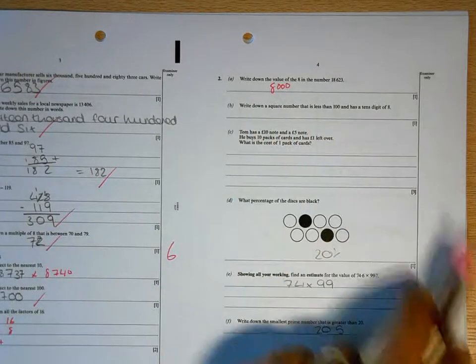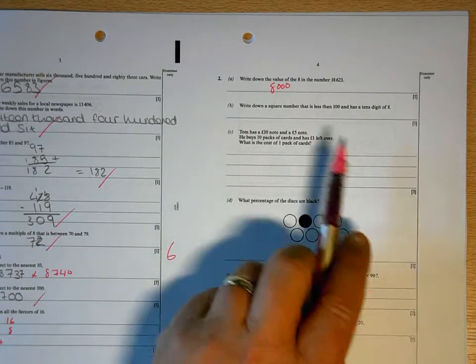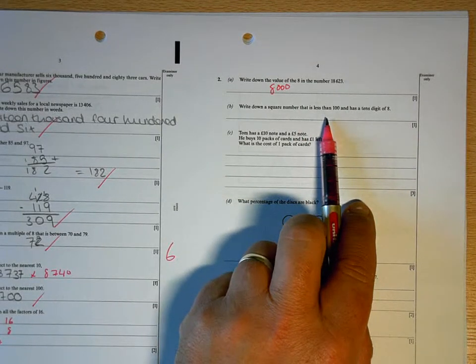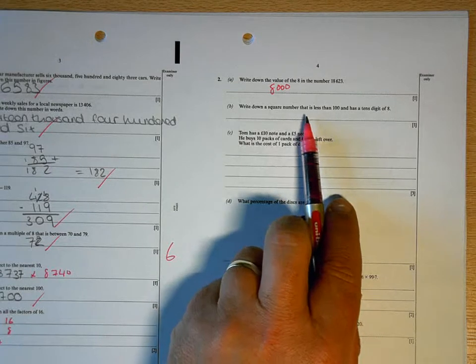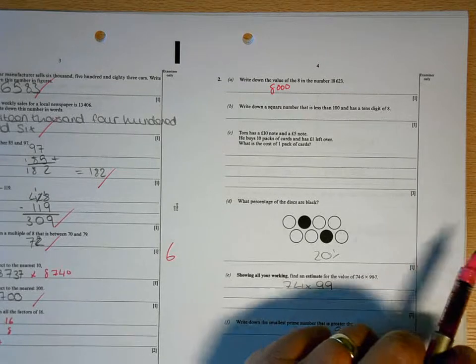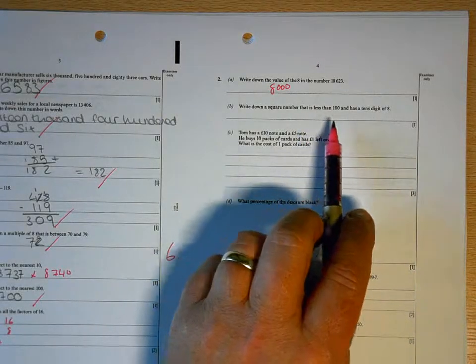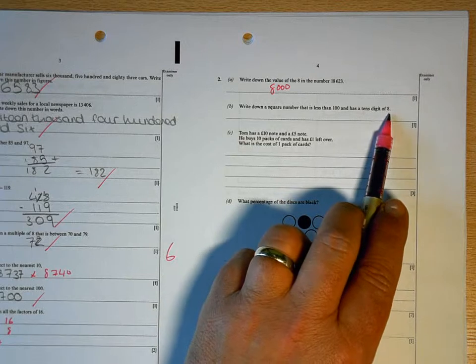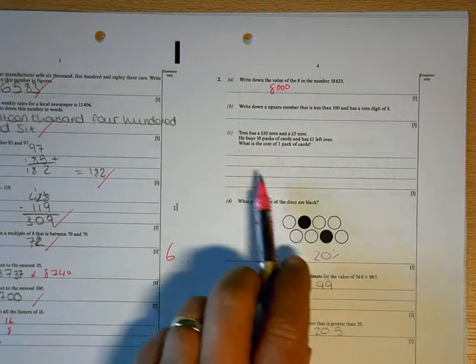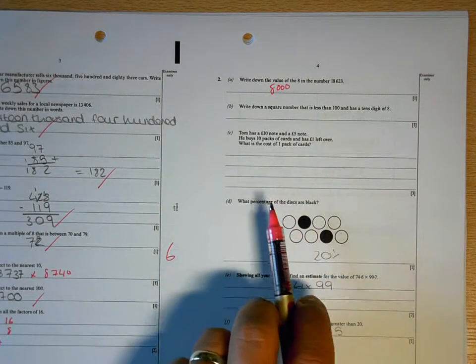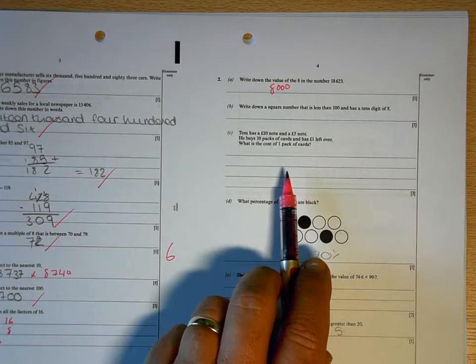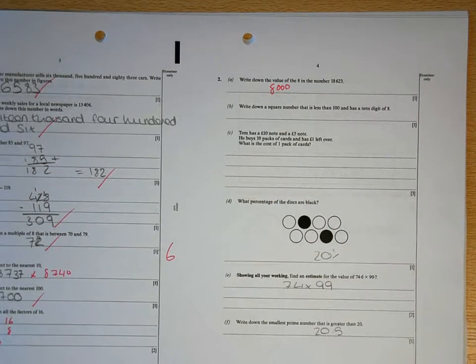Write a square number that is less than 100 and has a tens digit of 8. Well, what you need to do there is know what your square numbers are. So 1 is a square number because 1 times 1 is 1. 4 is a square number because 2 times 2 is 4. 3 times 3 is 9, so 9 is a square number. And keep doing that until you find the one that's in the 80s. And what you end up with is 81. Take a look at how I go through these questions on the video clip because these are ones that you need to be able to do in order to get anywhere near a grade C.